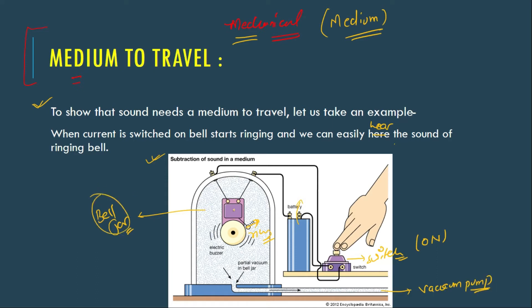In this apparatus, there is a bell jar, a bell inside it, a battery, and a switch. There is also a vacuum pump. When the current flowed into the bell, the bell will start ringing. Initially, there was air in the bell jar. When I switched on, I heard a sound that was very loud.